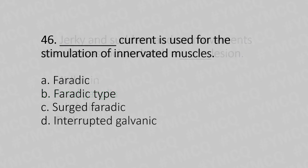Question 46: Which current is used for stimulation of innervated muscle? Option A: Faraday. Option B: Faradic type. Option C: Surged Faradic. Option D: Interrupted galvanic. The answer is Option C: Surged Faradic.